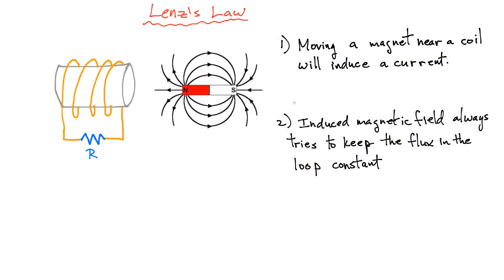A couple of points to mention about Lenz's Law before we get started. The first important point is that moving a magnet near a coil — a closed loop — is going to induce a current in that coil. That induced current, I, is also going to produce an induced magnetic field, and our job is to find the direction of I and the direction of that induced field. The second key point is that the induced magnetic field will always try to keep the flux in the loop constant.